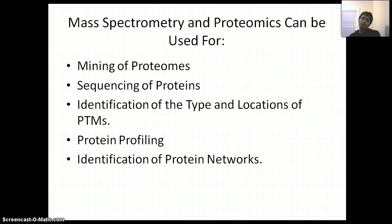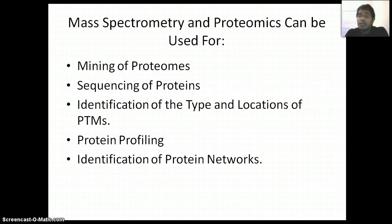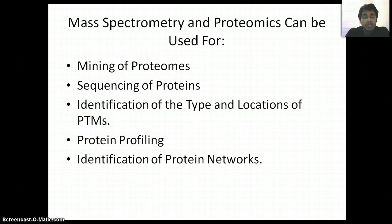The important tool for proteomics study is called mass spectrometry. Mass spectrometry can be used in proteomics for different purposes, like mining of proteins — where we identify as many proteins as possible in a subcellular fraction, a cell, mitochondria, or even a tissue. And sequencing of a protein, which may be a novel sequencing of a protein or further clarification of your identified protein.